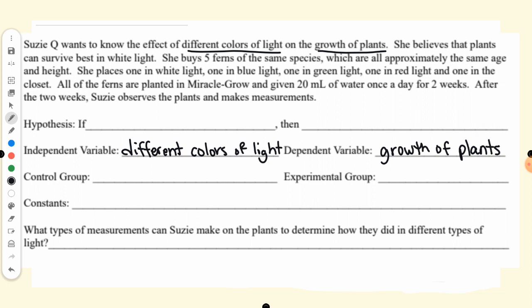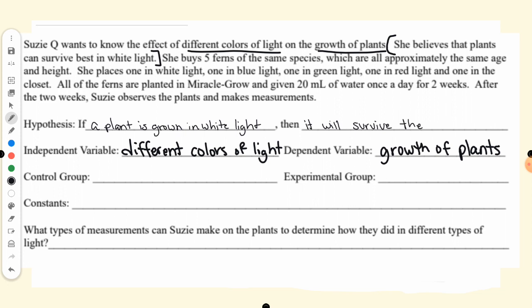Suzy's hypothesis is that she believes that plants can survive best in white light. The way we write that in hypothesis form would be: if a plant is grown in white light, then it will survive best, or grow the most. So that is what she is committing to — she thinks that the white light is going to be the best.